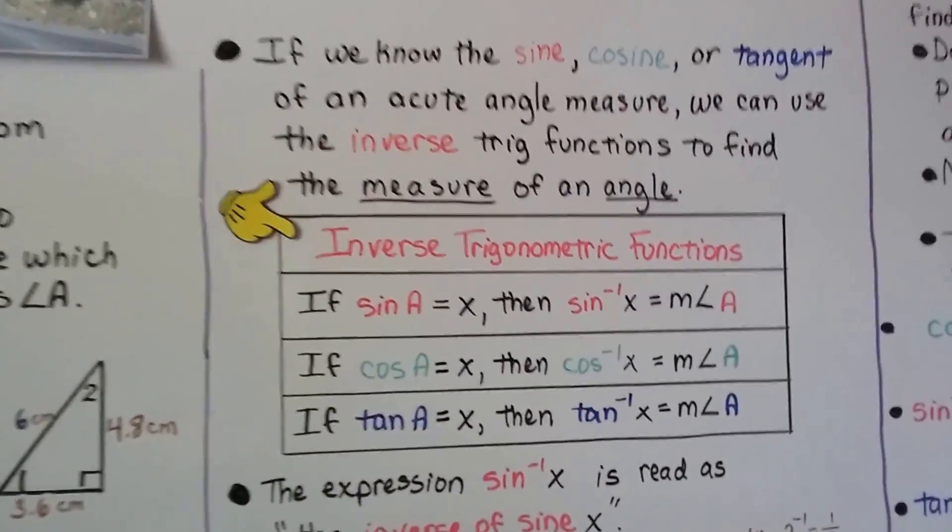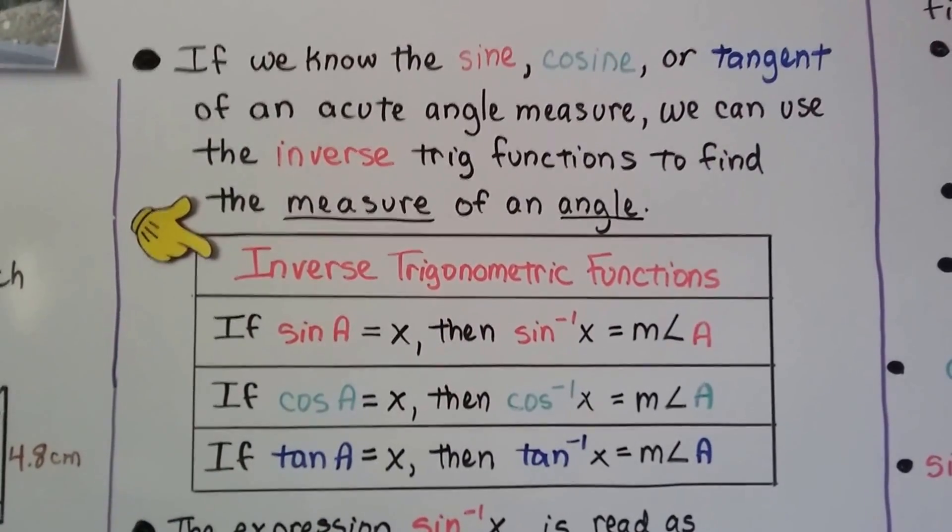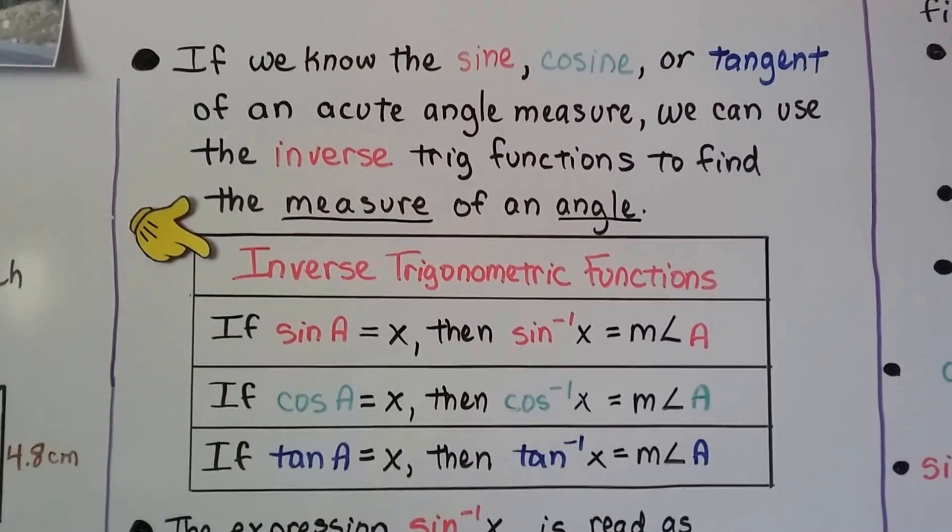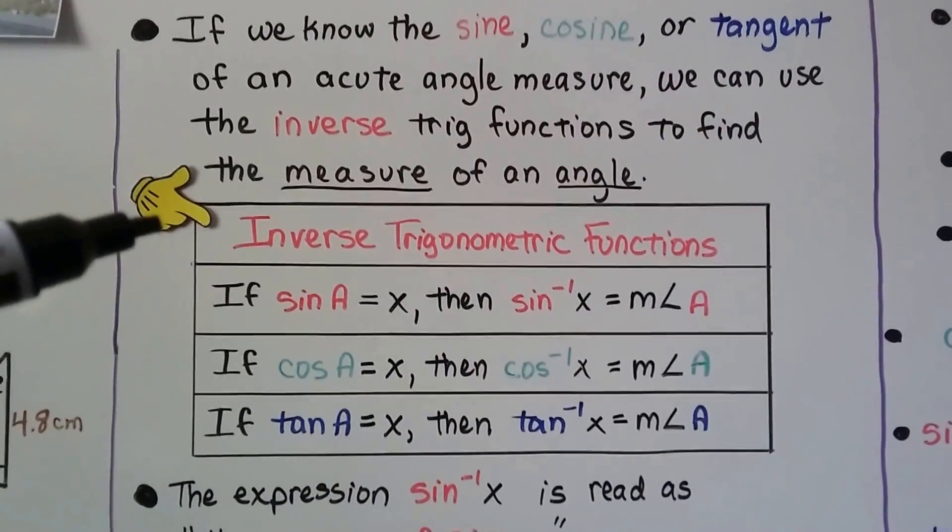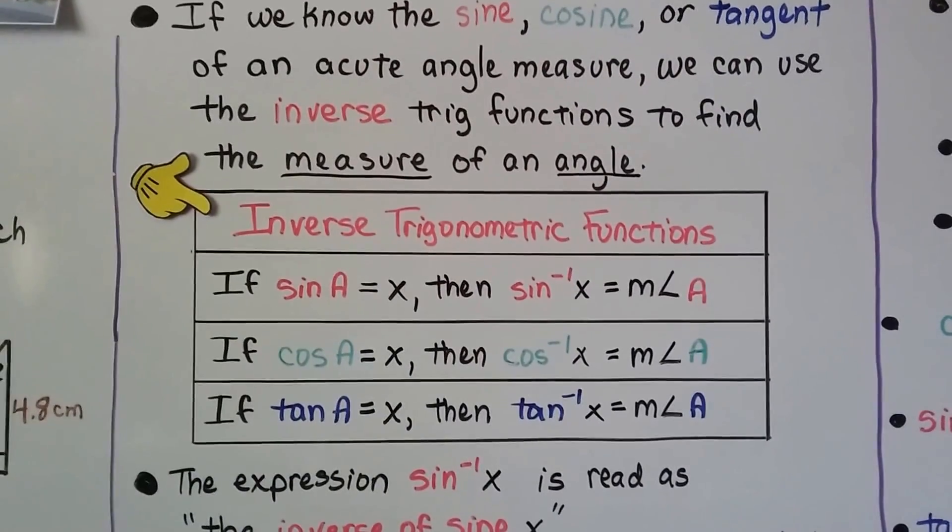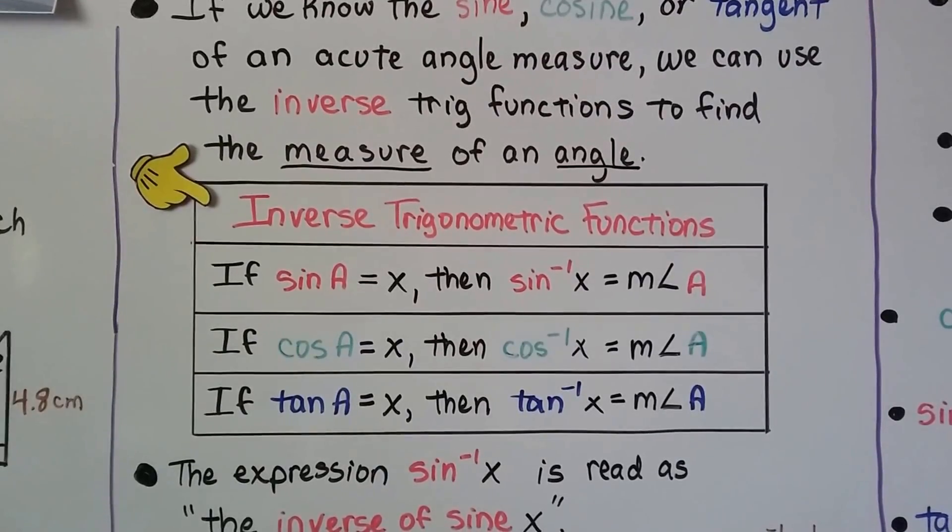If we know the sine, cosine, or tangent of an acute angle measure, we can use the inverse trig functions to find the measure of an angle. A little yellow hand means you should probably write this in your notes. Here's some inverse trigonometric functions.